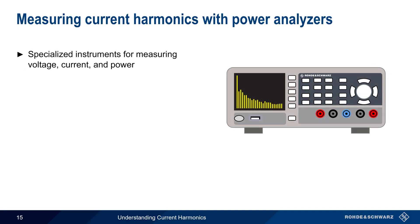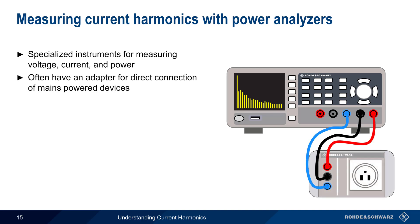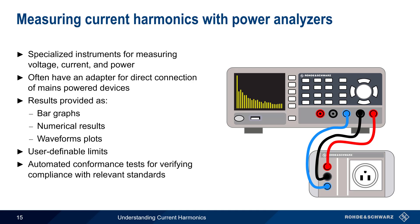Power analyzers are specialized instruments for measuring power and power-related quantities, including current and current harmonics. Because they are primarily used for measuring mains-connected devices, they often come with a plug-style adapter, which is then connected to the analyzer. Results are presented as bar graphs showing harmonic amplitudes, numerical results for both individual harmonics and total harmonic distortion, and also as plots of the current waveform, which allows visual detection of current waveform distortion. Typically, these measured values can be tested against user-defined limits, and some power analyzers also have automated conformance tests, which check for compliance against various international limits and standards for current harmonics.